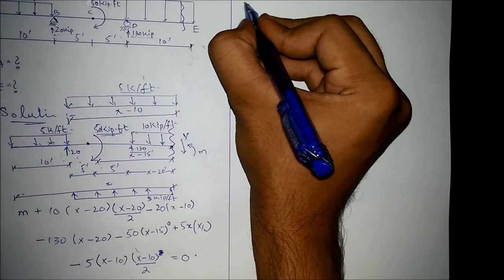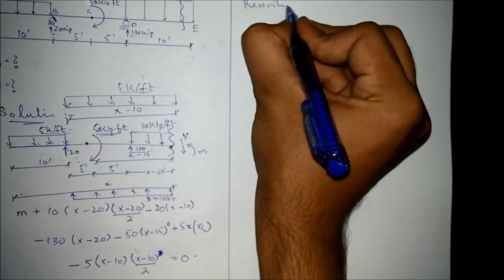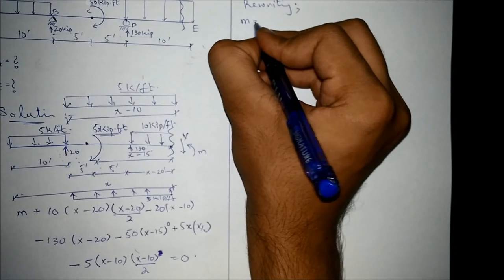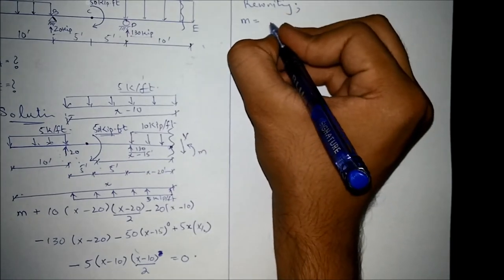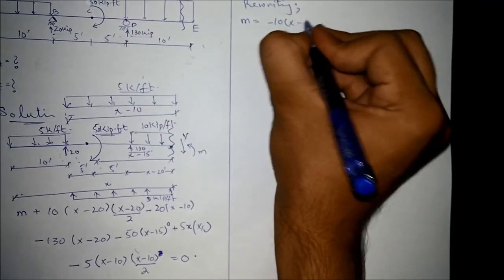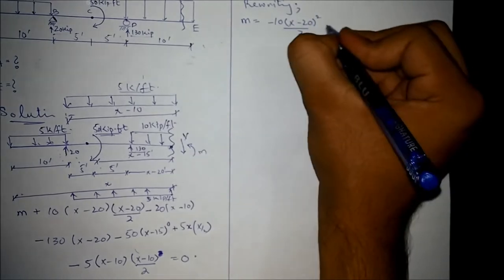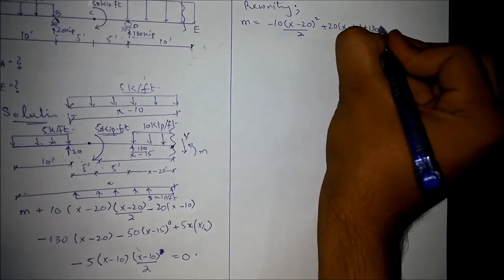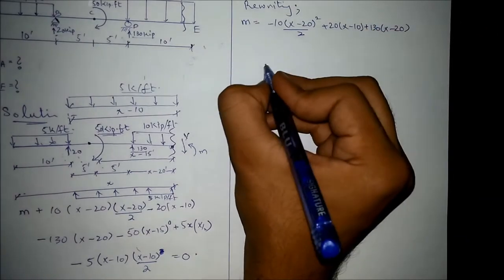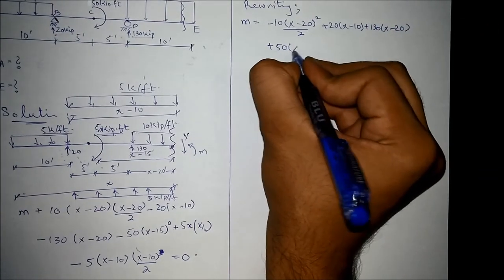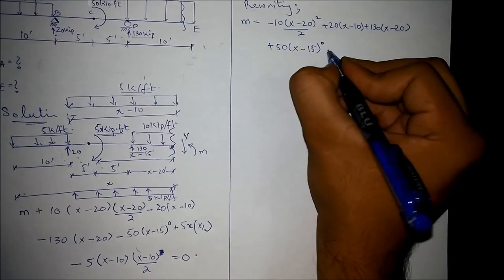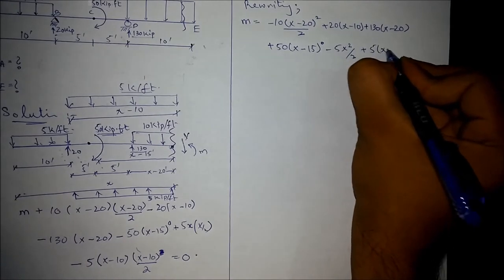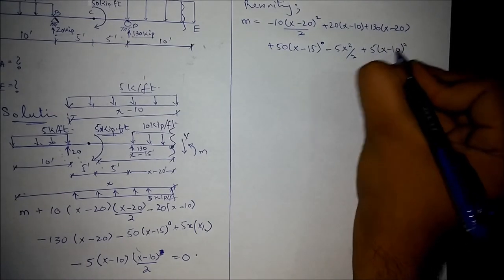The resulting moment equation is: M = −10(X−20)²/2 + 20(X−10) + 130(X−20) + 50(X−15)⁰ − 5X²/2 + 5(X−10)²/2, where the reactions 20 kip and 130 kip and the 50 kip-foot moment are incorporated with their appropriate signs and lever arms.